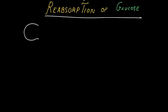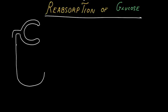I am drawing a nephron. This is the Bowman's capsule, and then it leads to the tubular part. The first portion of the tubular part is the proximal tubule. Then it leads to the loop of Henle and the thick portion of the loop of Henle.